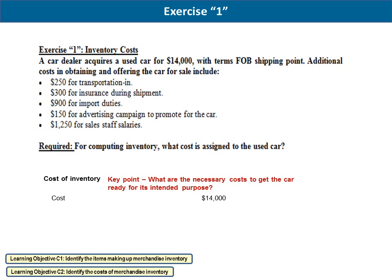Now we analyze each additional expense to determine whether it's necessary to bring the asset to a ready-for-use state. The $250 for transportation is necessary to bring the car from abroad to the dealer's store — we include it. The $300 for insurance during shipment is also necessary to ensure the car reaches its destination — we include it. The $900 for import duties is a type of tax on imported goods; the car cannot enter the country without paying it — so we include those $900 as well.